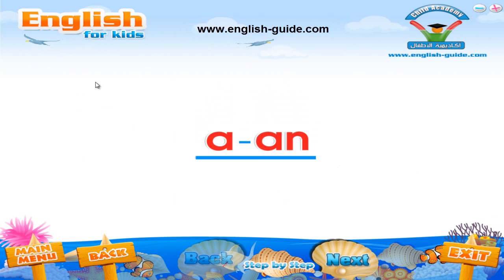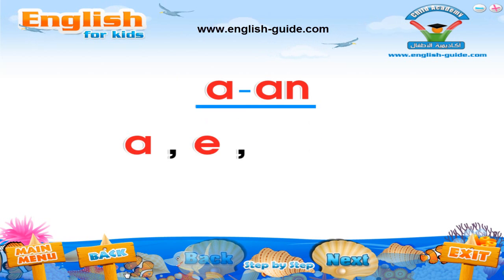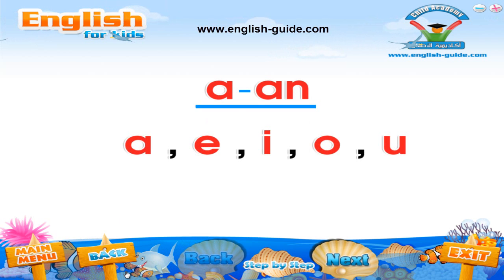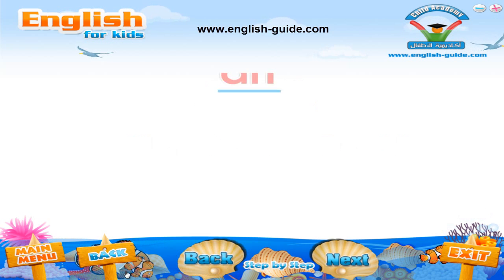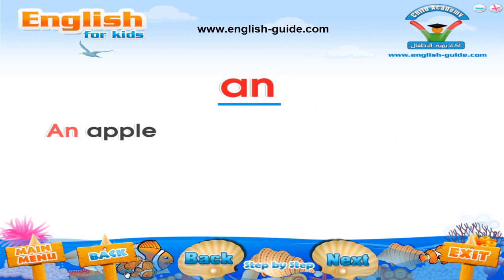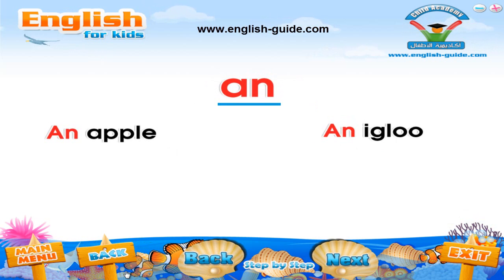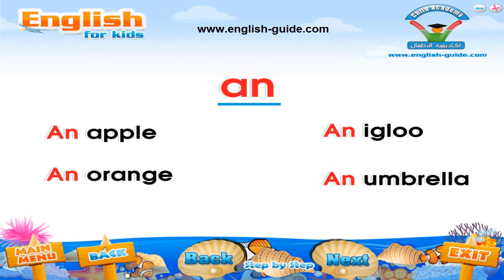If a word begins with a vowel — a, e, i, o, or u — we use the word 'an' before it. For example: an apple, an igloo, an orange, an umbrella.